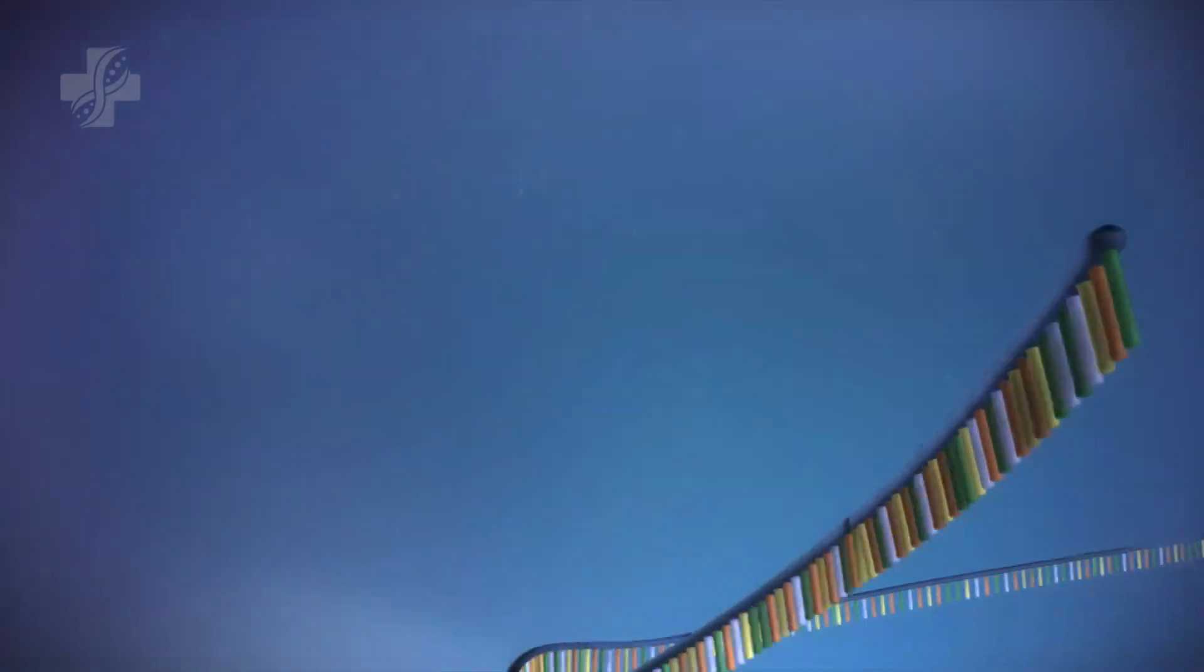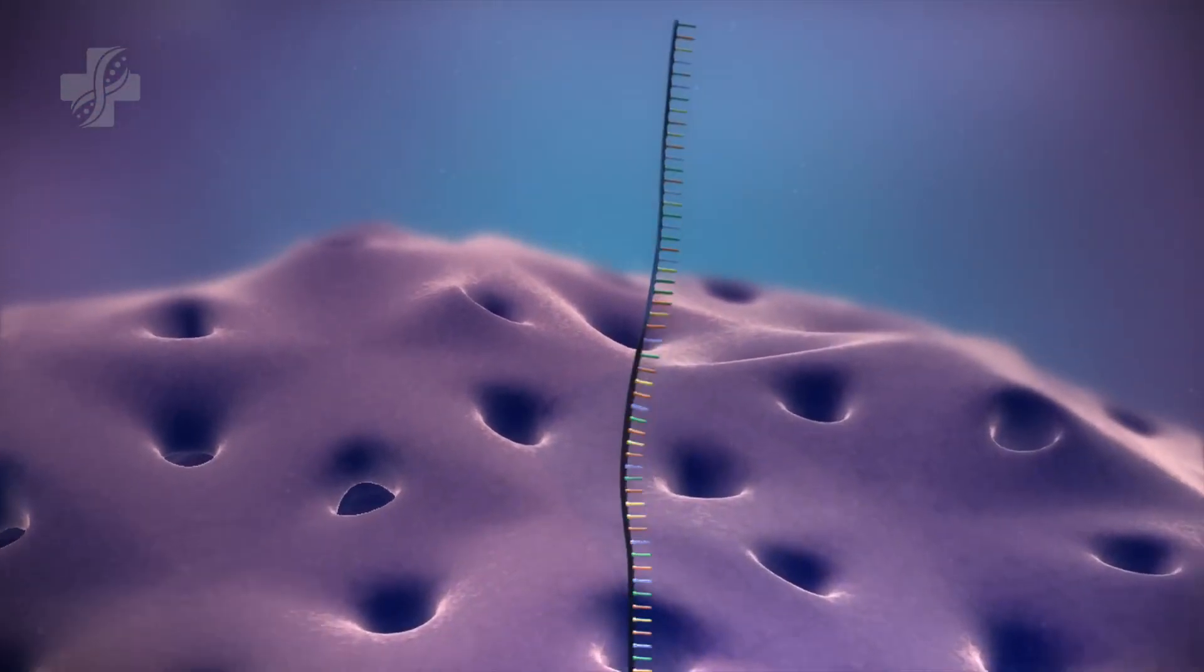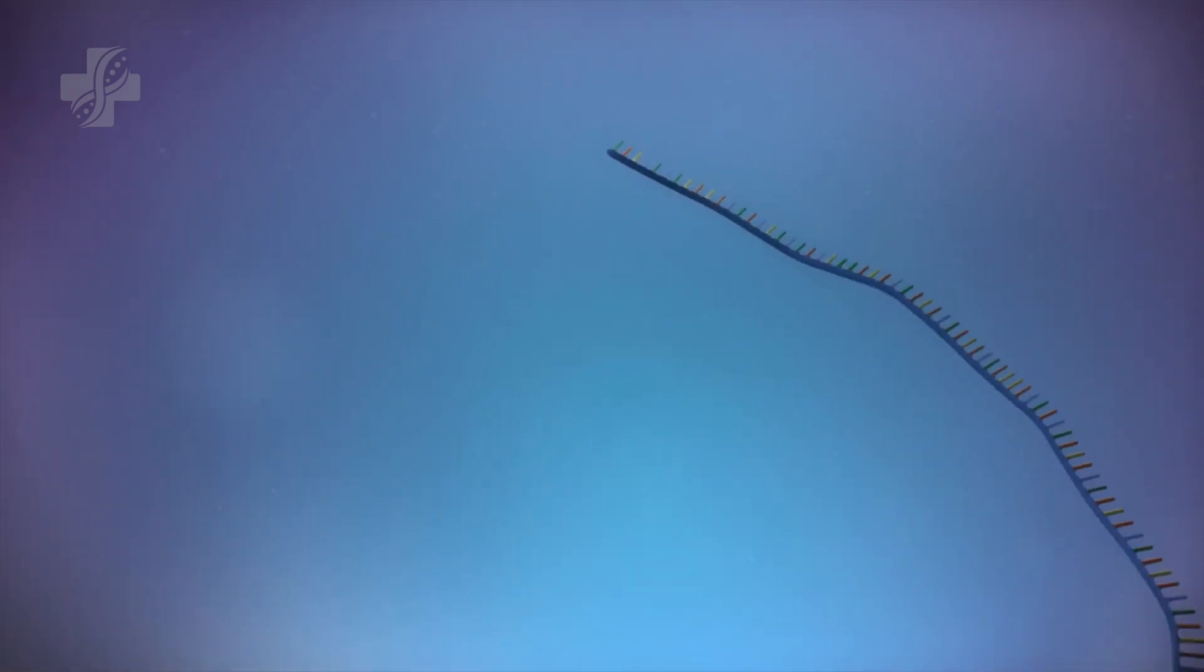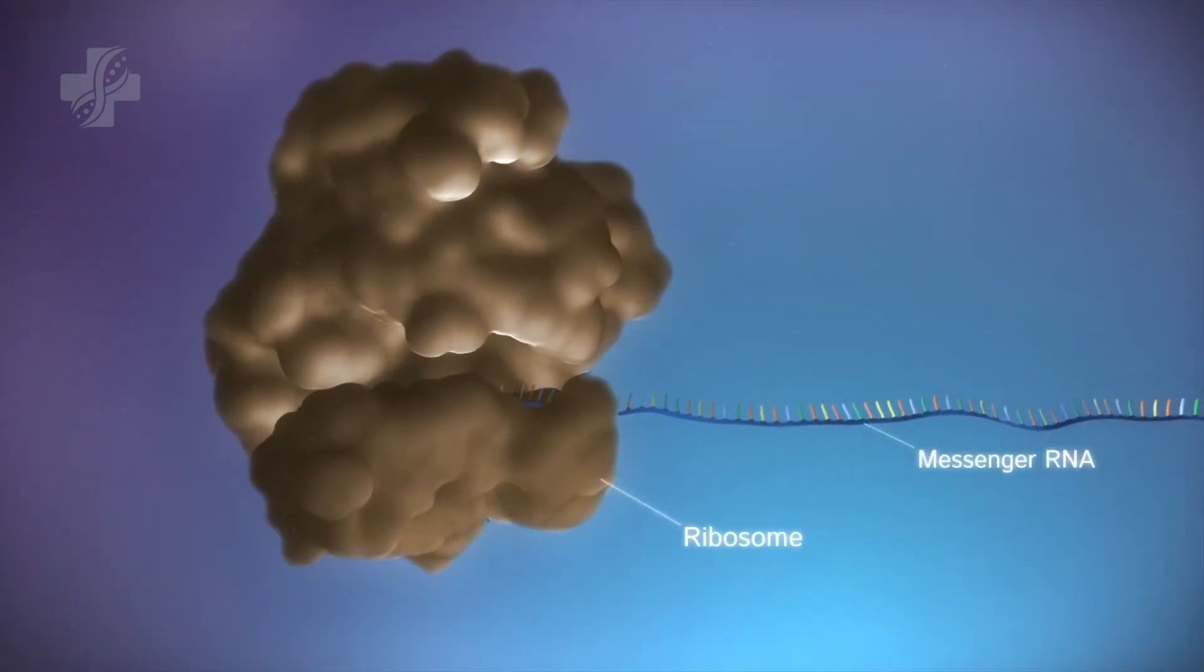The messenger RNA then moves out of the nucleus into the cytoplasm. Protein factories in the cytoplasm, called ribosomes, bind to the messenger RNA.